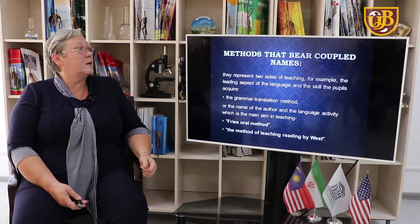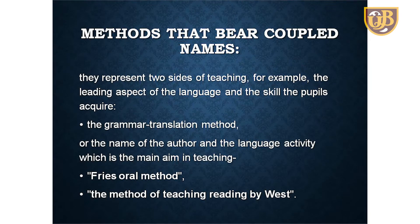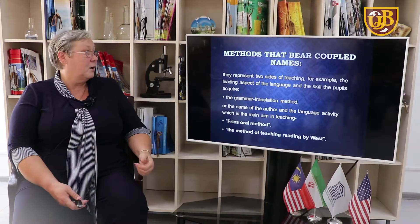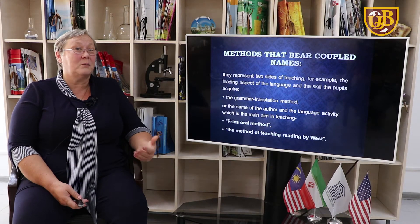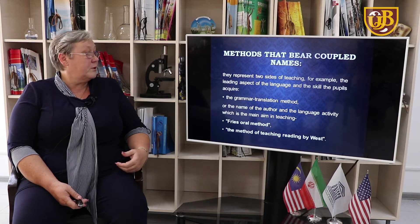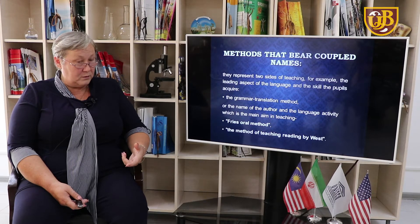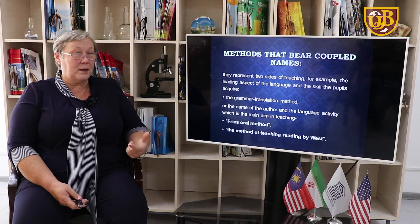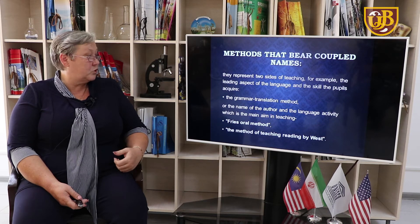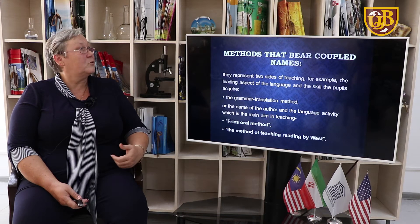We also have a group of methods that bear coupled names, representing two sides of teaching — for example, the leading aspect of the language and the skill the pupil acquires. For example, the grammar translation method: grammar is the aspect and translation is the skill. Or the name of the author and the language activity: Fry's oral method, and the method of teaching reading by West.